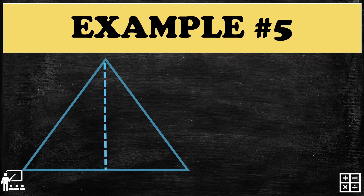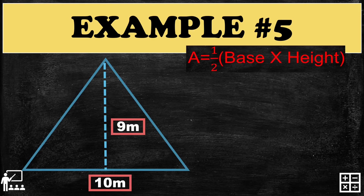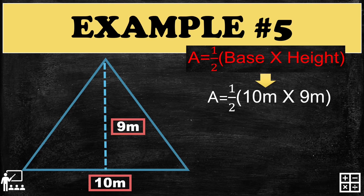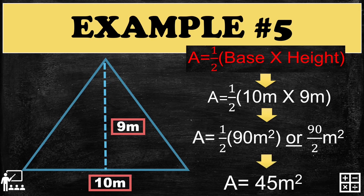Our last example, Example number 5: a triangle has a base of 10 meters and a height of 9 meters. Use the formula and substitute the measurements. 10 times 9 gives you 90. Divide 90 by 2, and the answer is 45 meters squared.